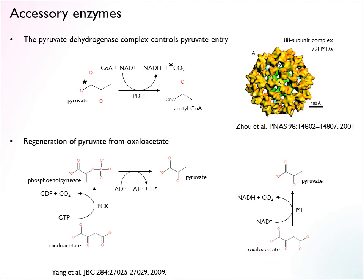Another way of doing this, which is actually a bit simpler, is malic enzyme. This is an enzyme that simply decarboxylates oxaloacetate to form pyruvate directly. This is a step that yields one NADH molecule, so it is also energy-yielding. In comparison, the PEPCK pathway requires a triphosphate but it is regenerated, so that pathway is overall energetically neutral.